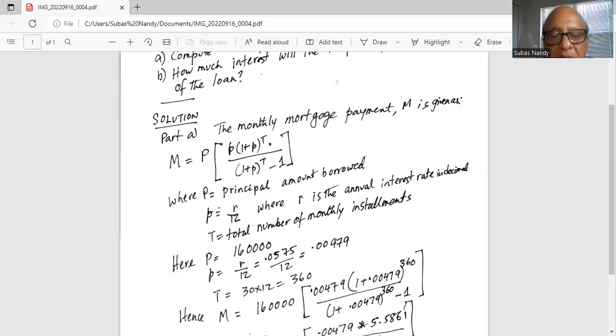And the total number of monthly payments is 30 years times 12 months per year, which is 360 months.